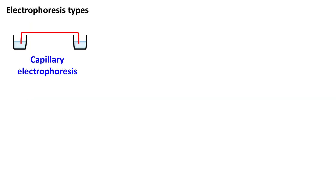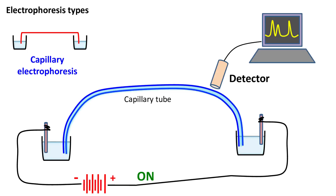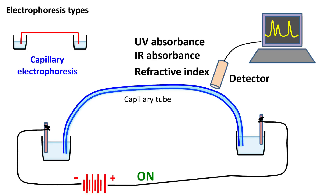Capillary electrophoresis — as the name suggests, the electrophoresis is carried out in a capillary tube. The ends of the capillary tube are immersed in a tank filled with buffer. When the electric field is switched on, the ions in the sample start moving. The ends of the capillary tube have a detector system which detects the presence of sample by UV absorbance, IR absorbance, or by change in the refractive index.